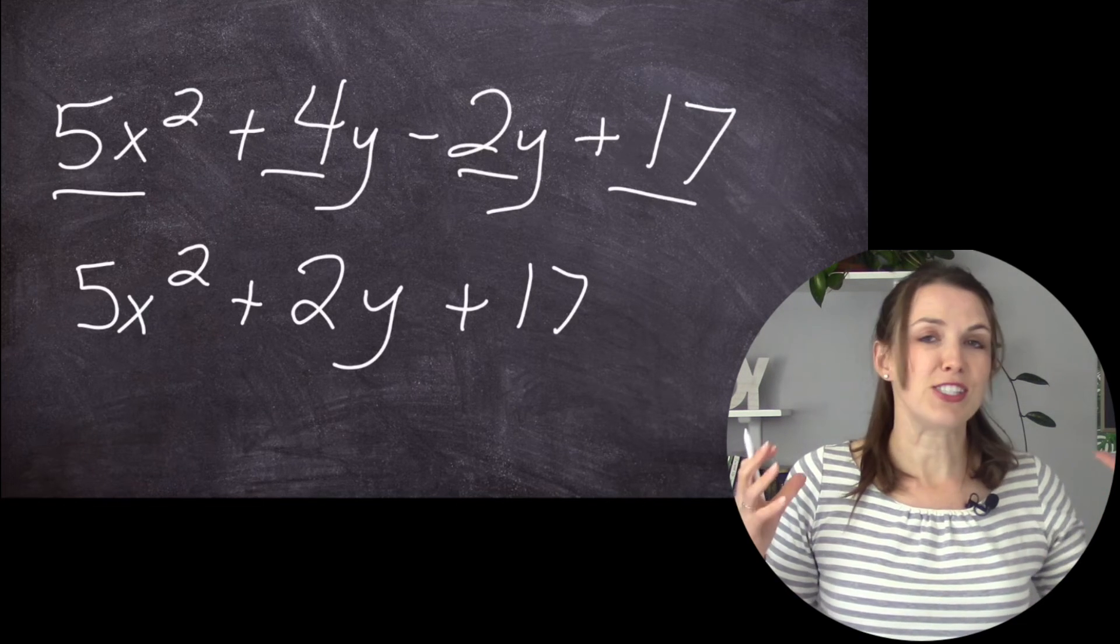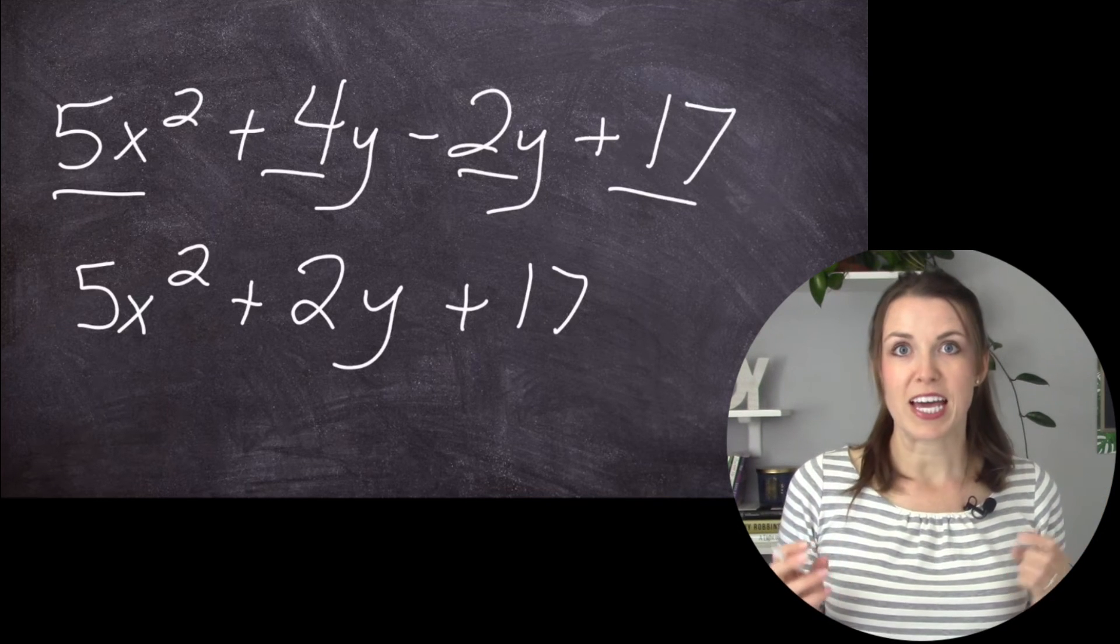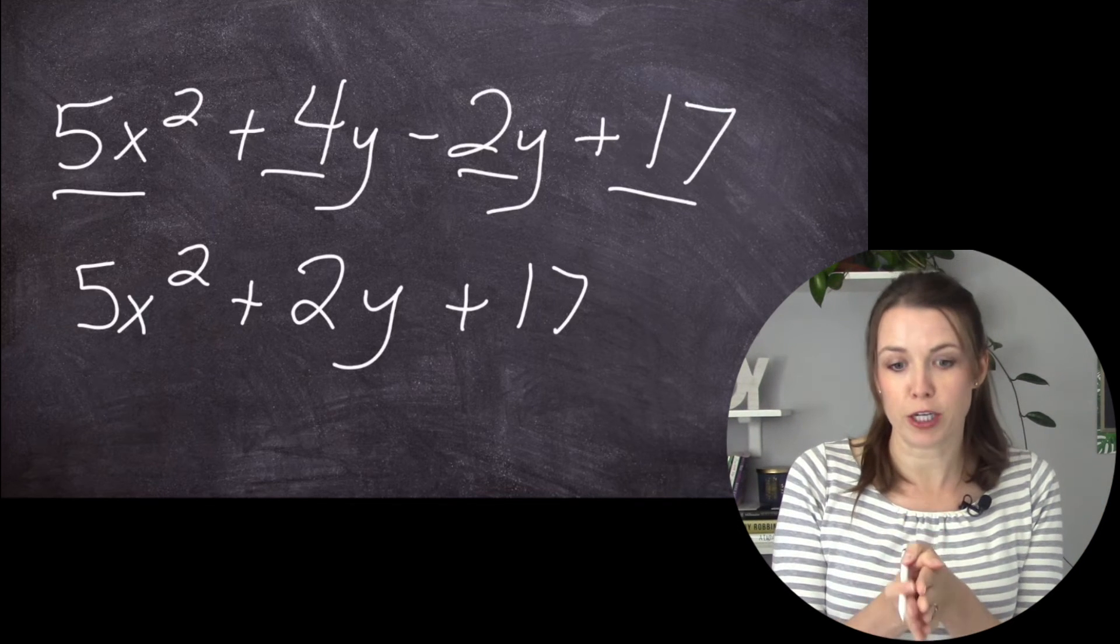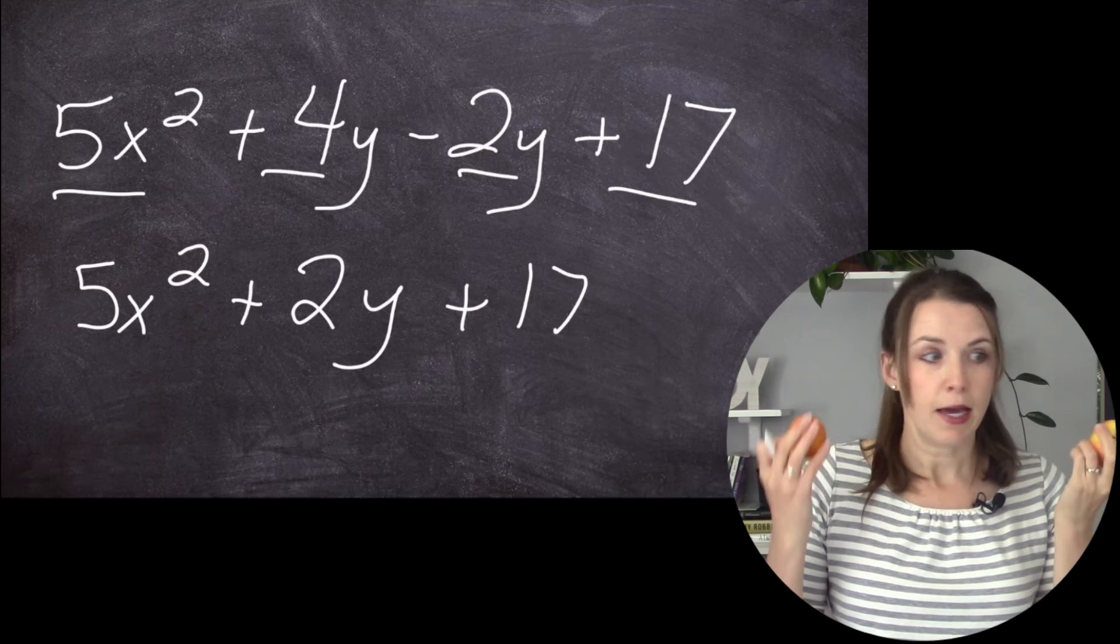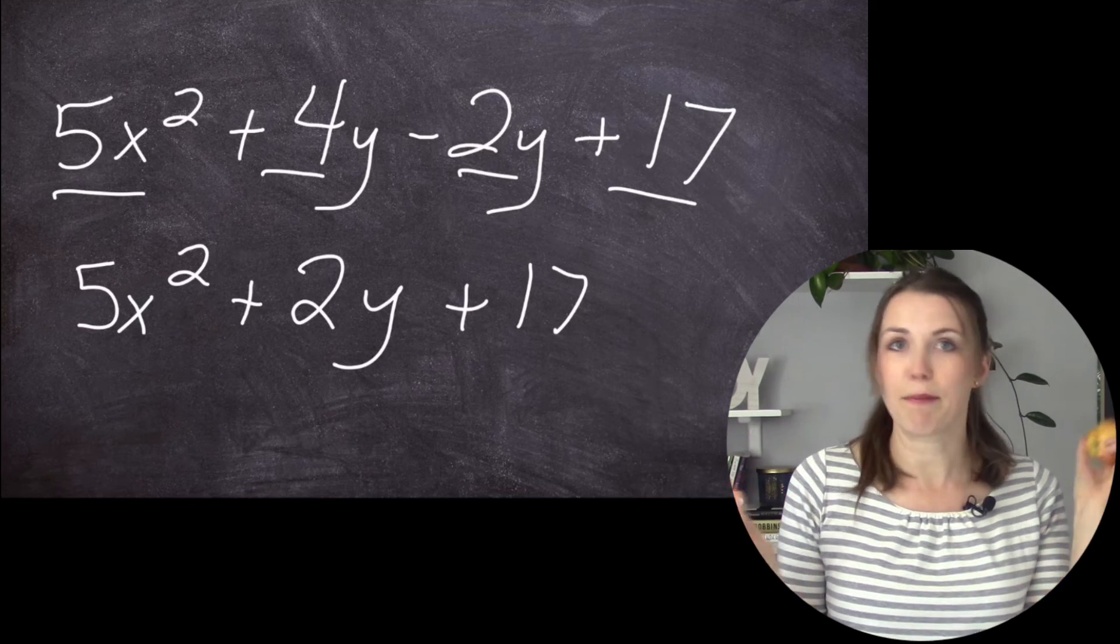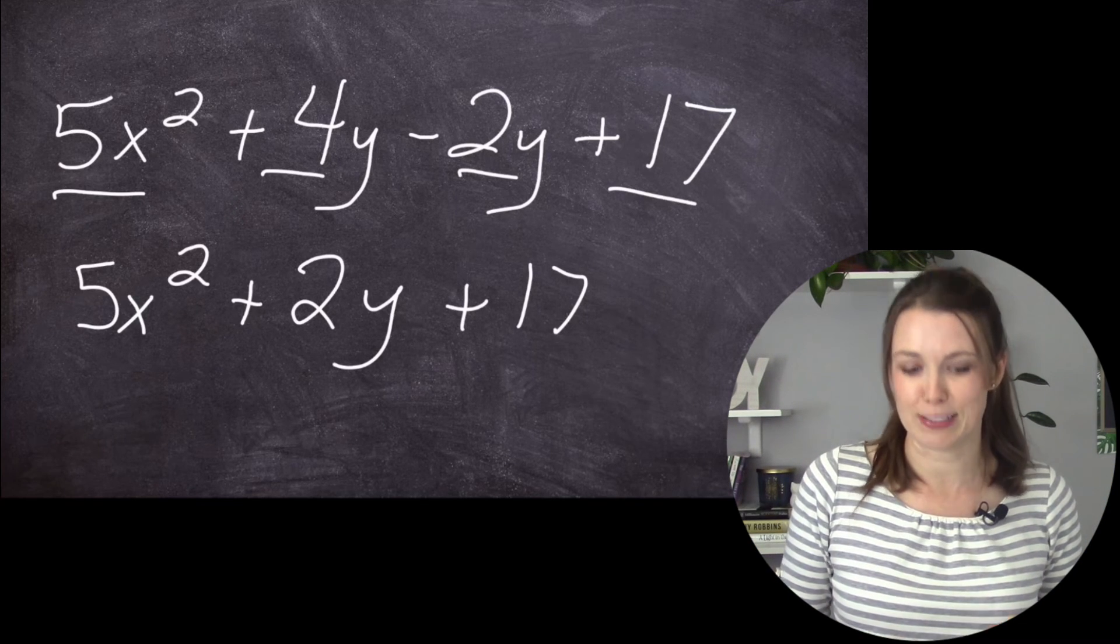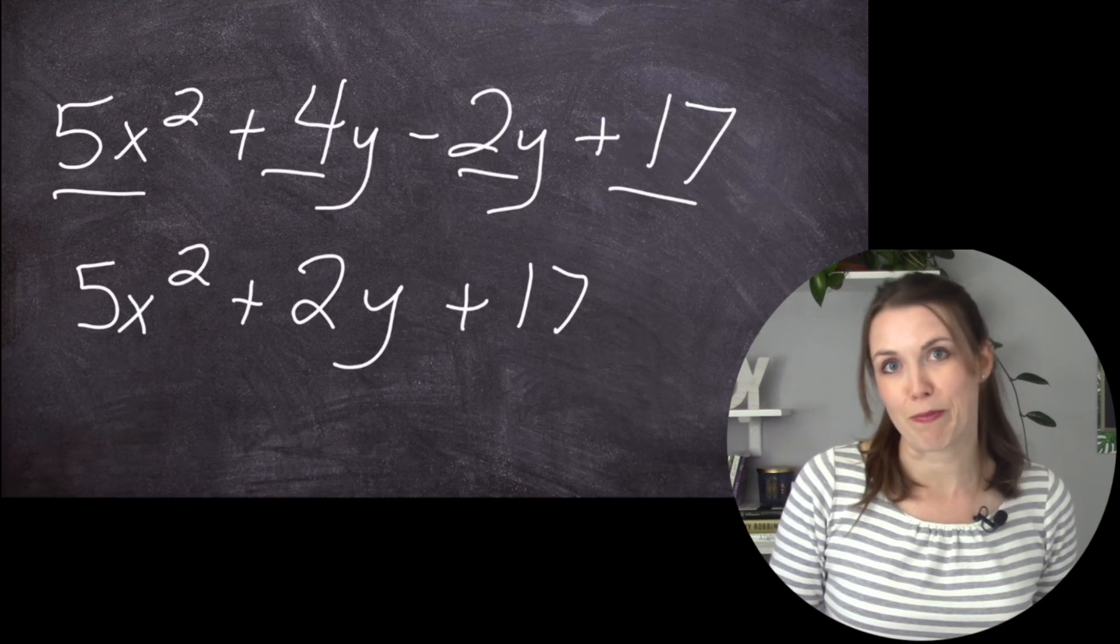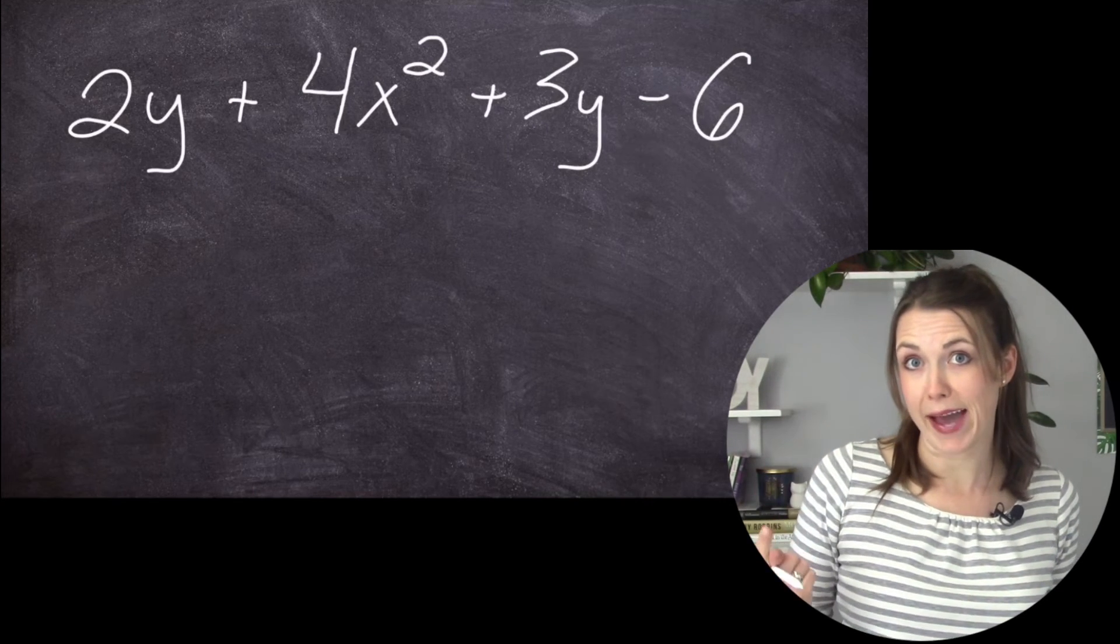So again, just make sure that when you're adding polynomials or subtracting polynomials, you can only add the fruit if it's the same fruit. Don't start adding oranges and bananas and apples. That's going for the fruit salad. That's not making it so that you have extra apples or something. We're going to do one last one, but then we're going to do a step past this.